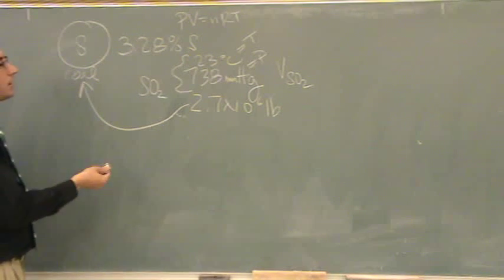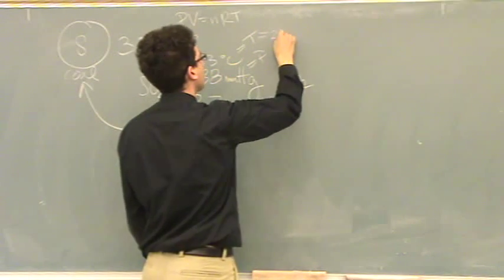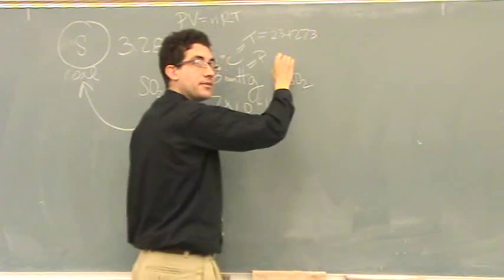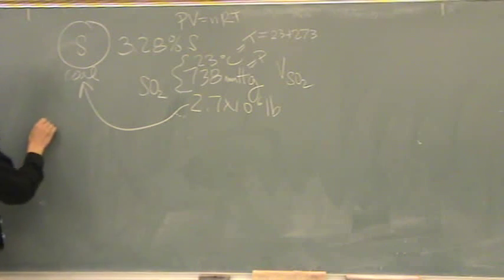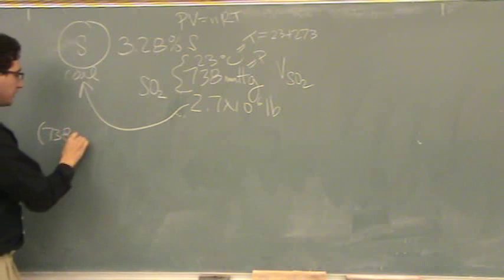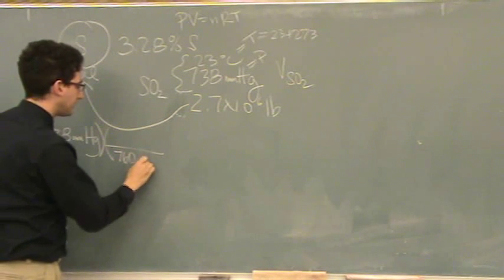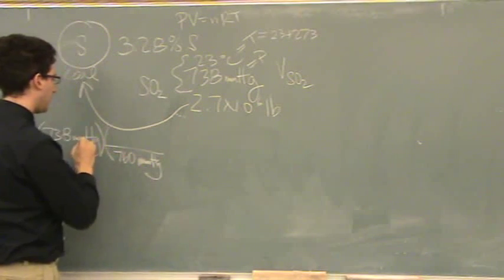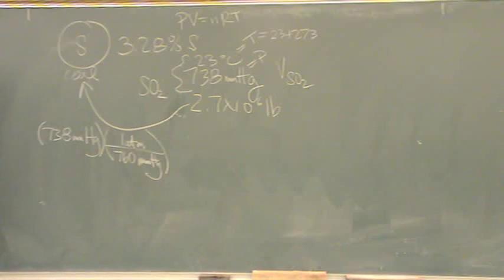Alright, so I have temperature, let's convert this to the correct units, 23 plus 273 to get Kelvin. Pressure, I have the pressure, let's convert that to atmospheres. And so that's 738 millimeters of mercury, and I happen to know that conversion. It's 760 millimeters of mercury, 1 atmosphere. So you can multiply that up. So far, so good? Yep. So I've got pressure in the right units, temperature in the right units, volume will be born in the right units. So now I'm just left over with moles.